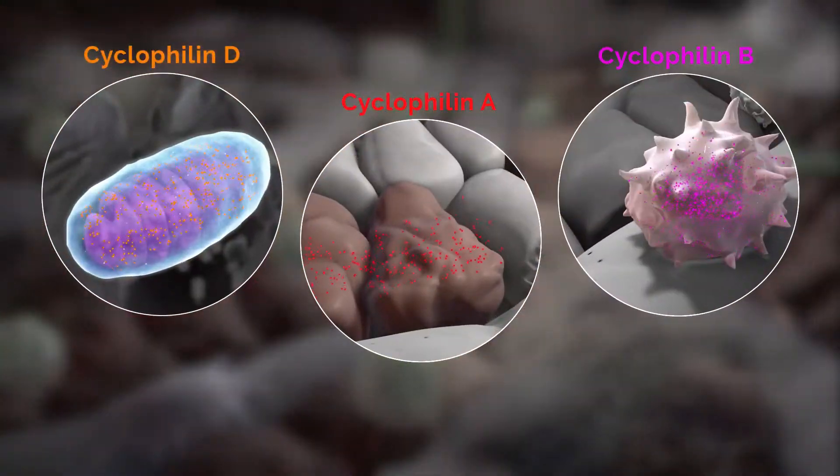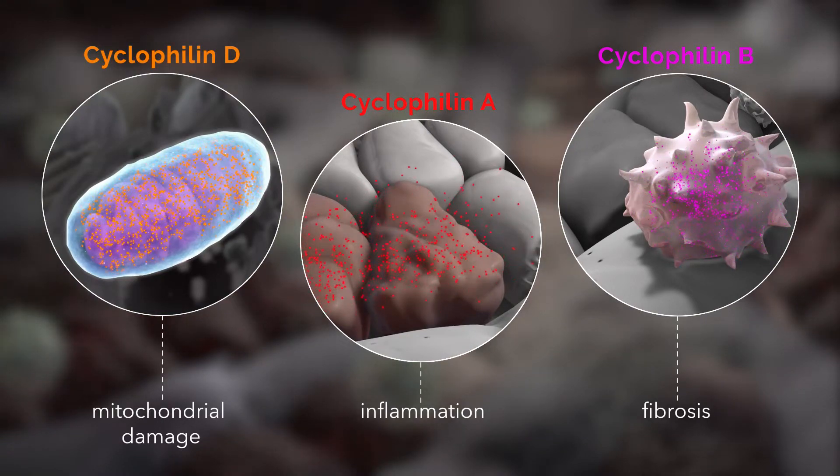Cyclophilins regulate all of these disease processes and can worsen liver damage.